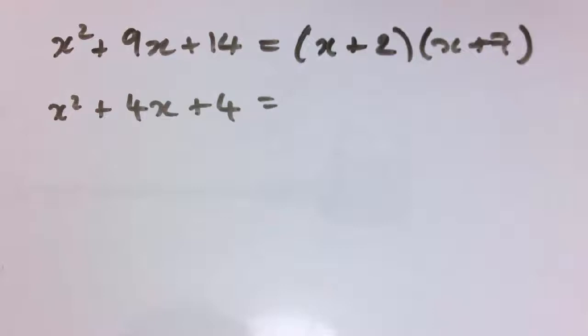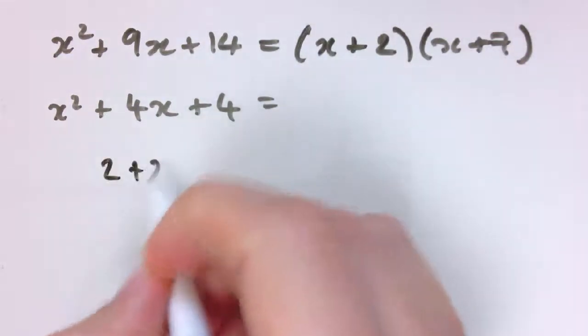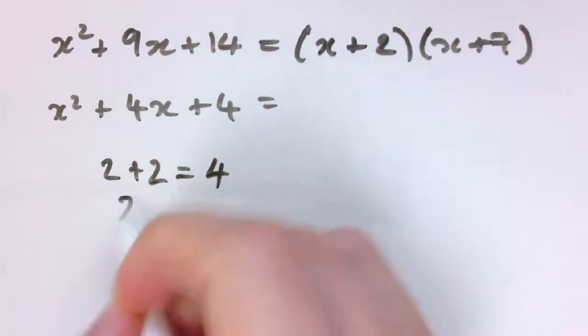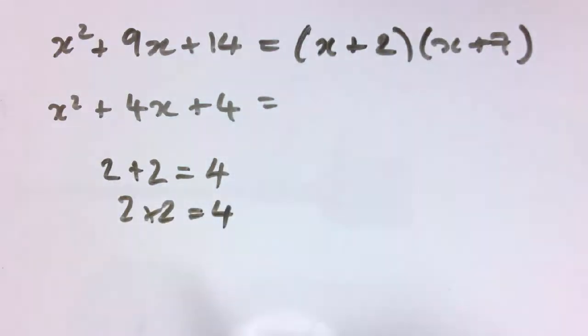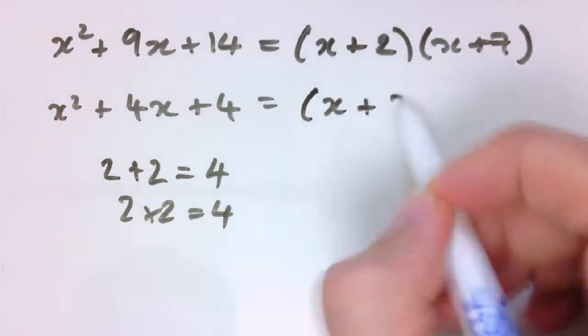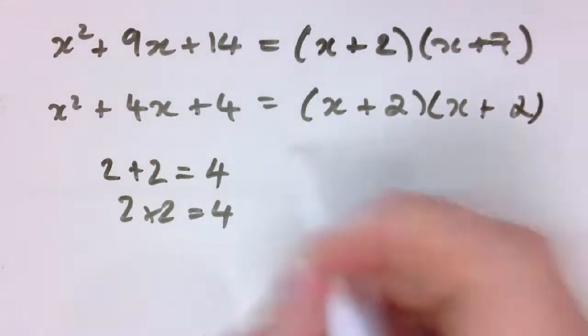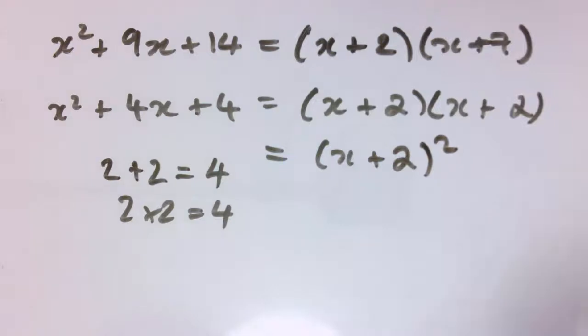Here's another one. This time I want two numbers that add together to give 4 and also multiply together to give 4. Think about it and hopefully you'll come to 2 and 2. So 2 plus 2 is 4 and 2 times 2 is 4. So this could be x plus 2 times x plus 2. If you wanted to you could write that as x plus 2 squared like that.